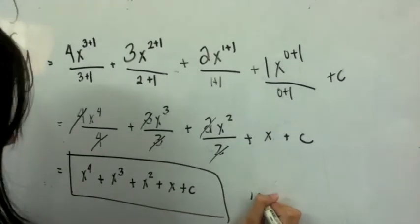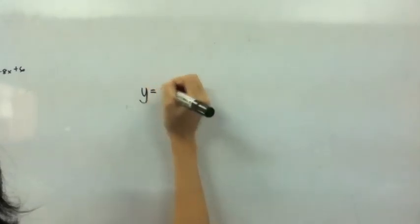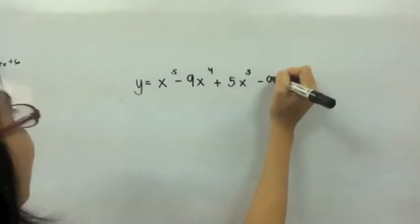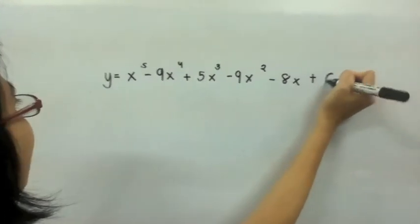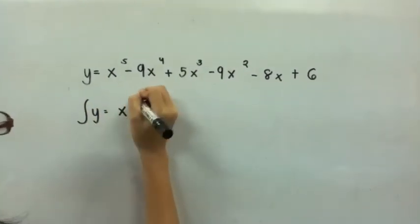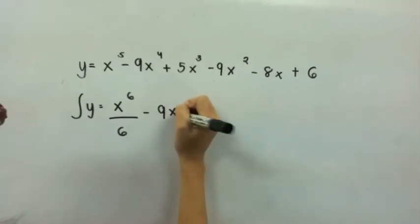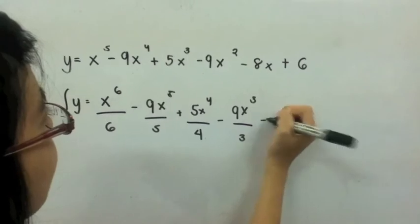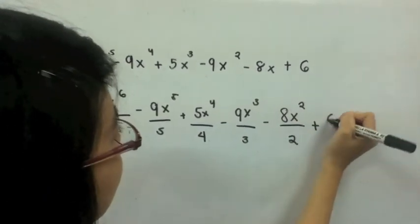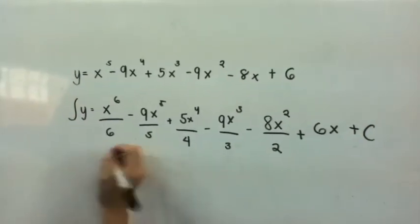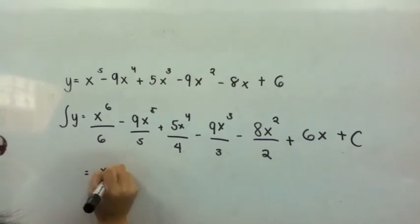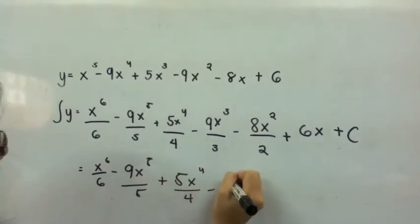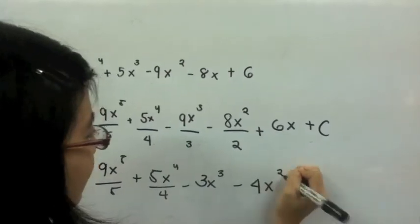Now we go to the next example. y is equal to x to the 5th minus 9x to the 4th plus 5x cubed minus 9x squared minus 8x plus 6. Getting the integral, we get x to the 6th over 6 minus 9x to the 5th over 5 plus 5x to the 4th over 4 minus 9x cubed over 3 minus 8x squared over 2 plus 6x plus C. For the final answer: x to the 6th over 6 minus 9x to the 5th over 5 plus 5x to the 4th over 4 minus 3x cubed minus 4x squared plus 6x plus C.